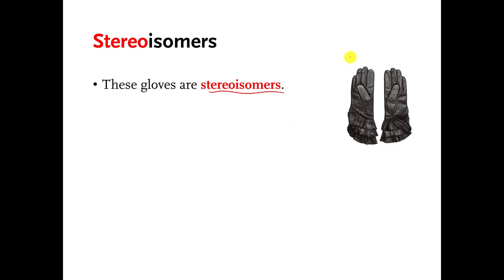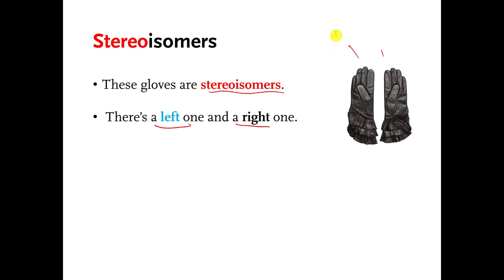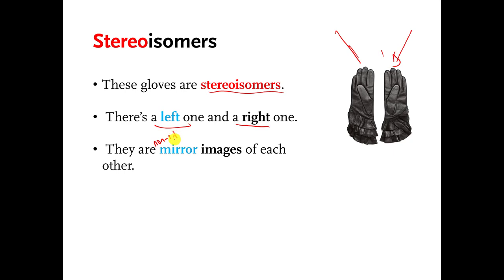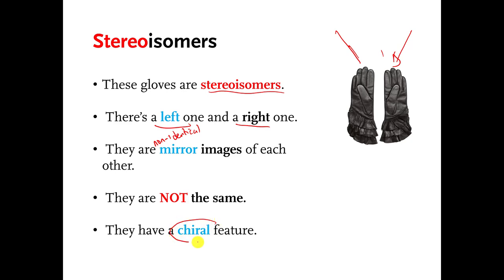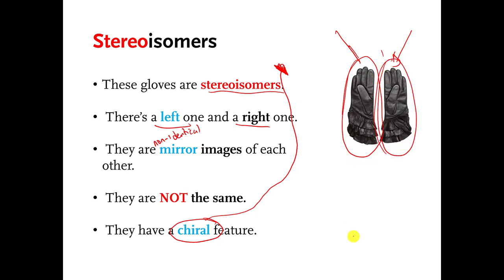Because the left glove and the right glove do not fit quite right, that means they are not the same thing — they look an awful lot alike, but they are not the same thing. Same with your left and right hands. In chemistry, what you say about them is they are non-identical mirror images of each other, and the important part is the non-identical part. The reflection of this glove in a mirror will be the other glove. In chemistry, what you would say is these gloves are stereoisomers. There is a left one and a right one. They are non-identical mirror images of each other, and the gloves have a chiral feature.